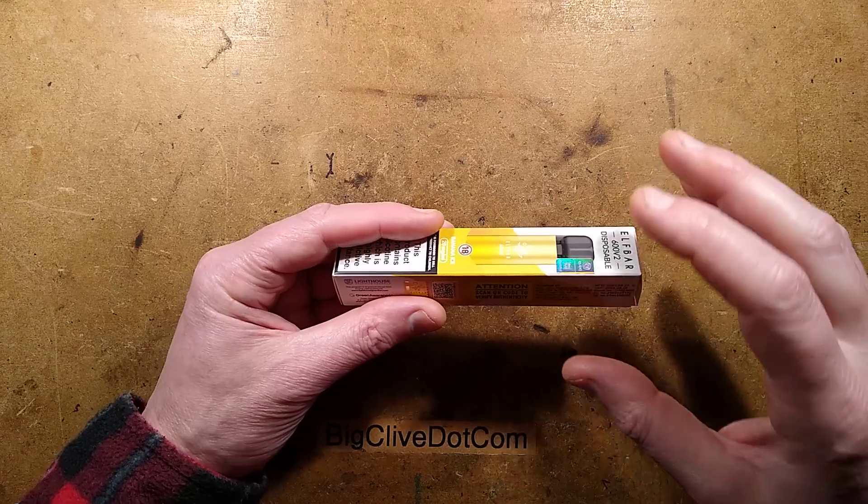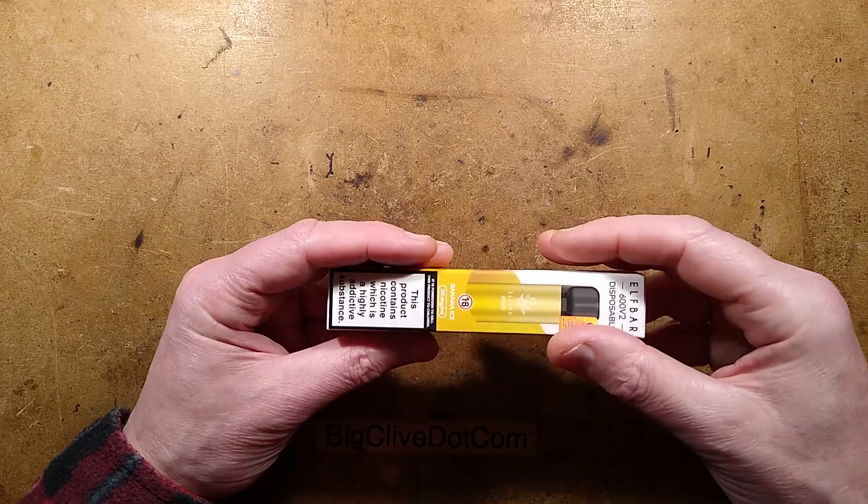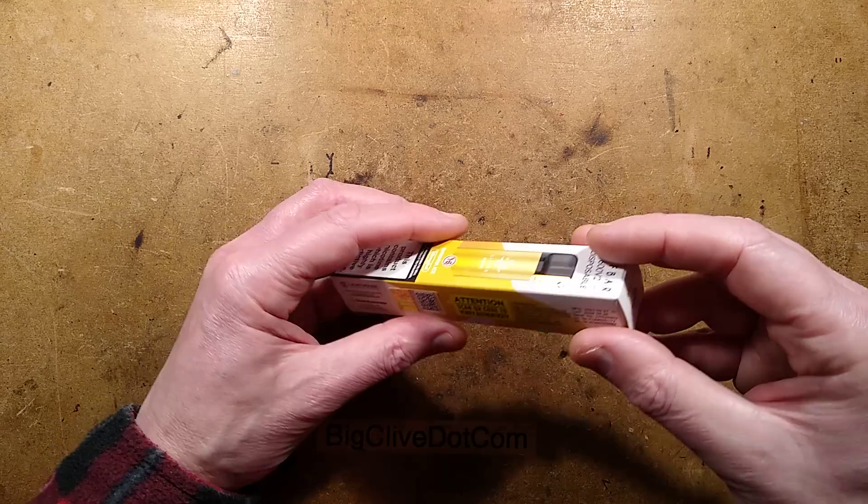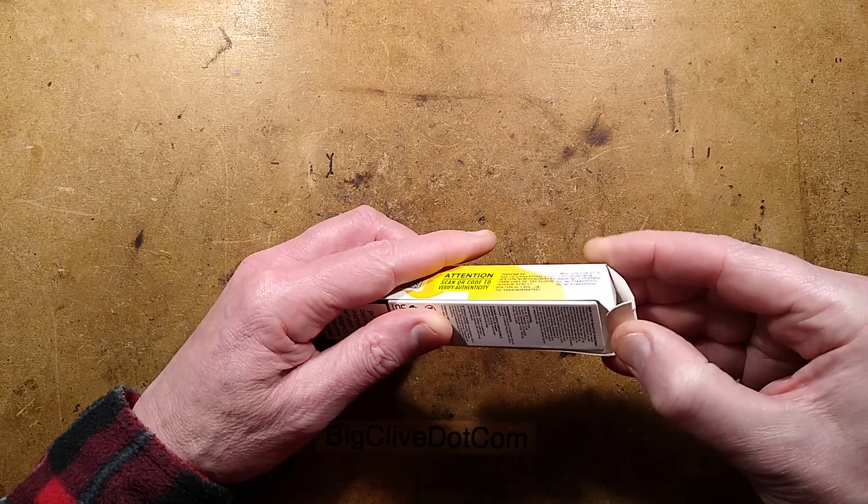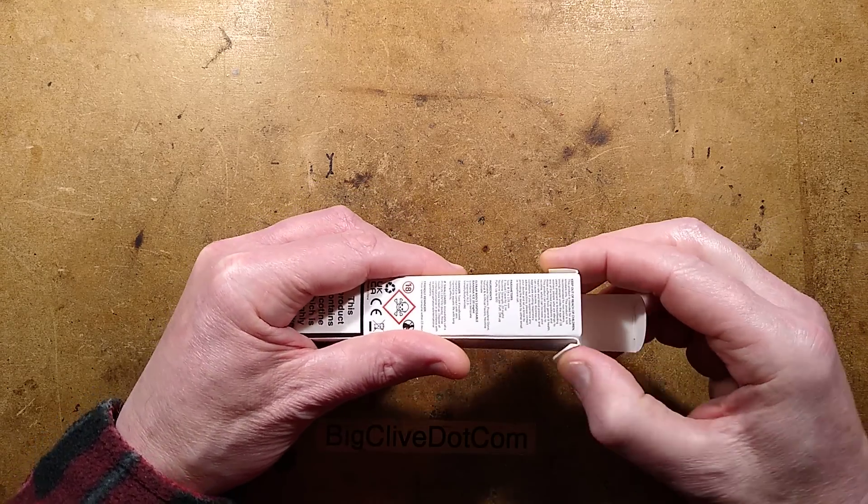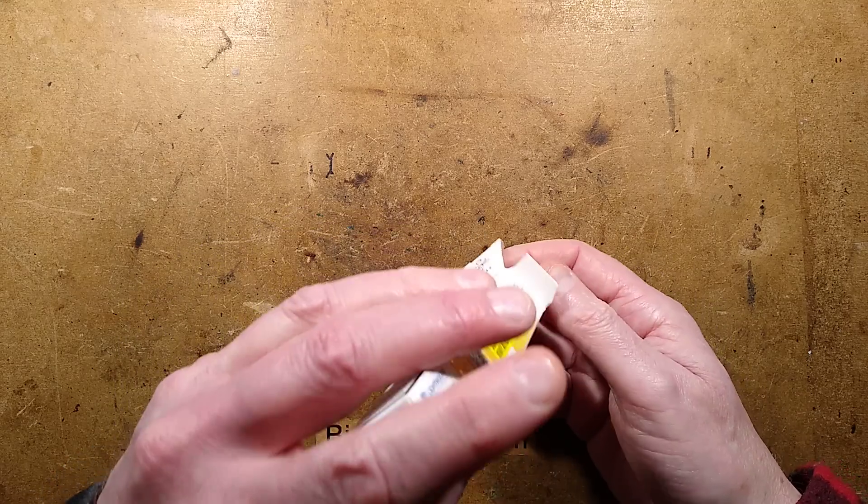Something very interesting has happened in the industry of disposable items that use one-use rechargeable lithium cells. Some people got in touch with me and said they appear to have capacitors in them now, and that doesn't really make much sense. However, what's inside does look like a capacitor.